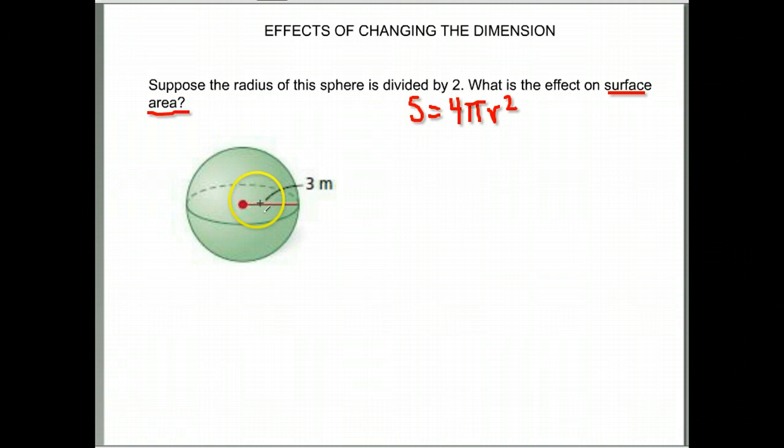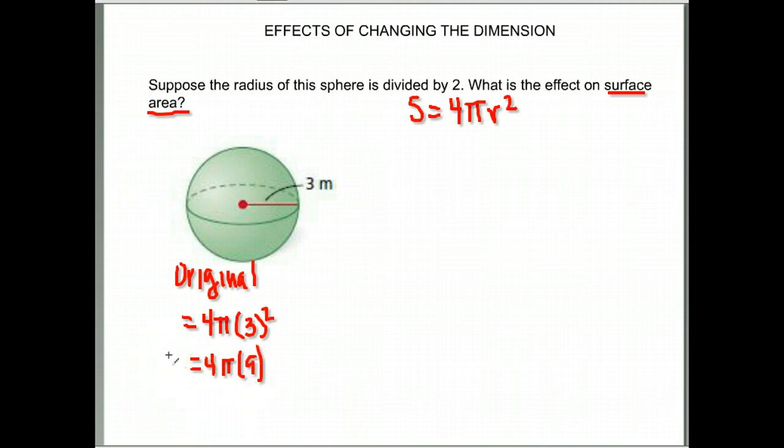Let's find the surface area of just our original figure. It has a radius of 3, so its surface area would be 4 times π times 3 squared. 3 squared, or 3 times 3 is 9, times 4. And I get a surface area of 36π.